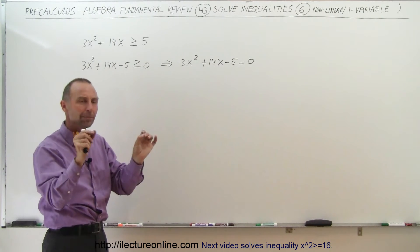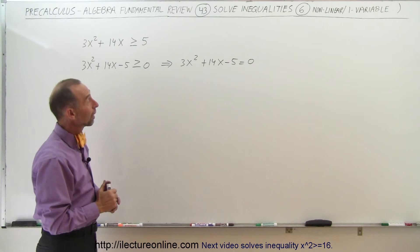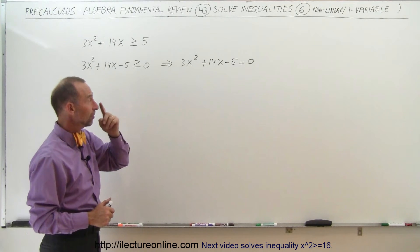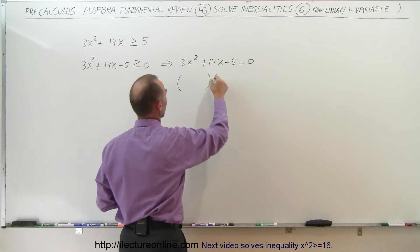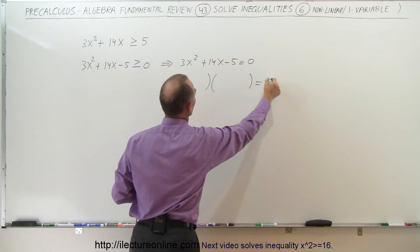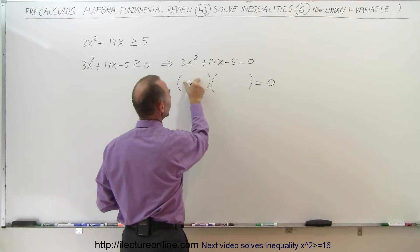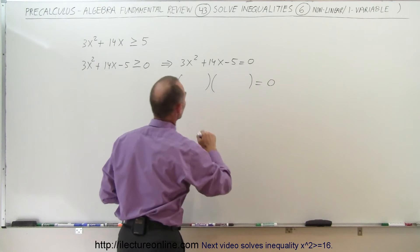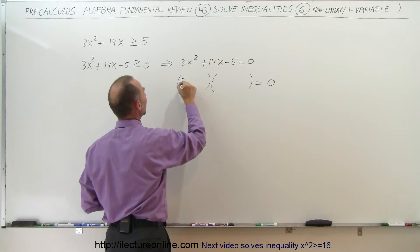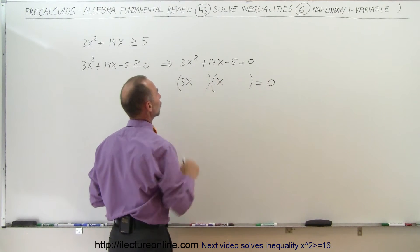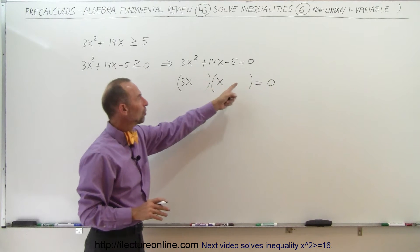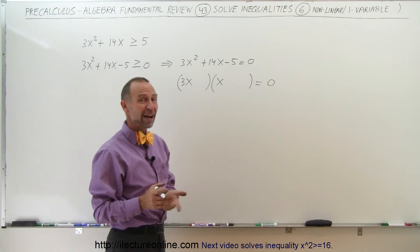To do that, we need to factor this. Let's do a little trial by error. Two binomials multiplied together should equal zero, and the first binomial will have to be 3x and x, because 3x times x gives us 3x squared.